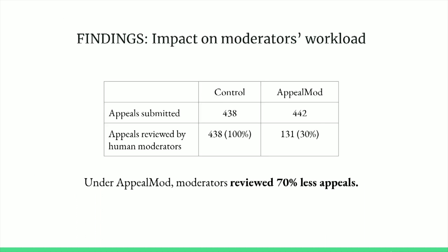After running the experiment for a few months, we looked at the data. About 900 appeals were submitted, roughly equally divided between the control group and Appeal Mod. The results show that only 30% of users under Appeal Mod actually completed their appeal. So we reduced the moderator's workload by simply hiding the 70% of appeals from users who did not complete the process.